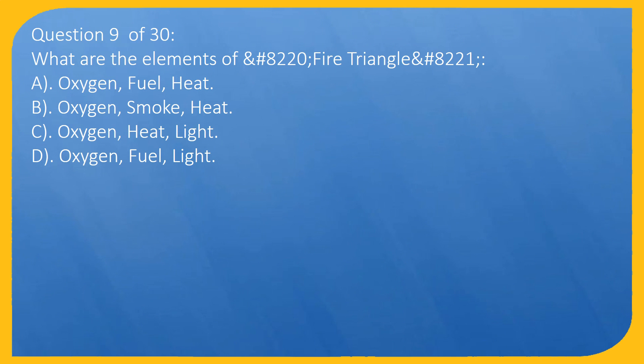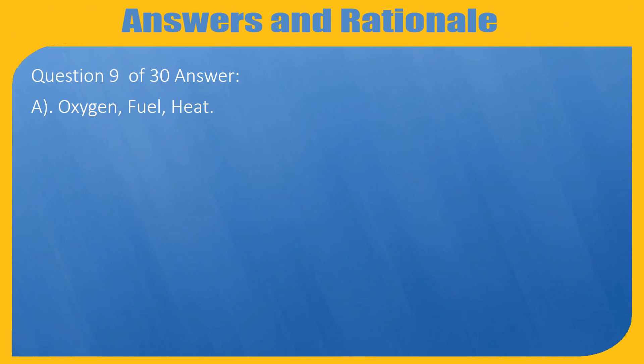Question 9 of 30: What are the elements of a fire triangle? A. Oxygen, fuel, heat, B. Oxygen, smoke, heat, C. Oxygen, heat, light, D. Oxygen, fuel, light. Answer: A. Oxygen, fuel, heat.